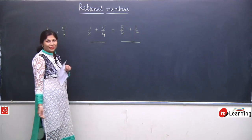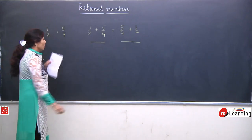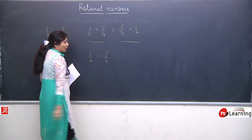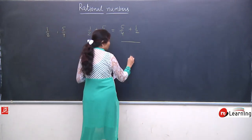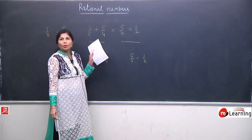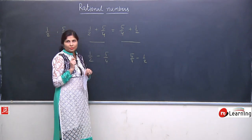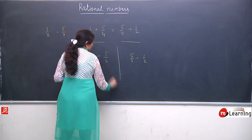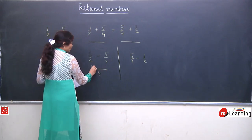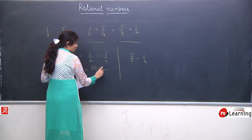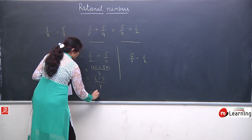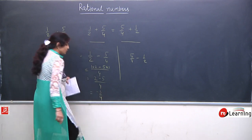Now the question arises: is commutative property also applicable for subtraction? We will check with the same numbers. For commutative property for subtraction, we compute 1/2 − 5/4 and also 5/4 − 1/2. If the answers are the same, the property is verified; otherwise it is not applicable. The first part gives us: LCM is 4, so 2/4 − 5/4 = −3/4.